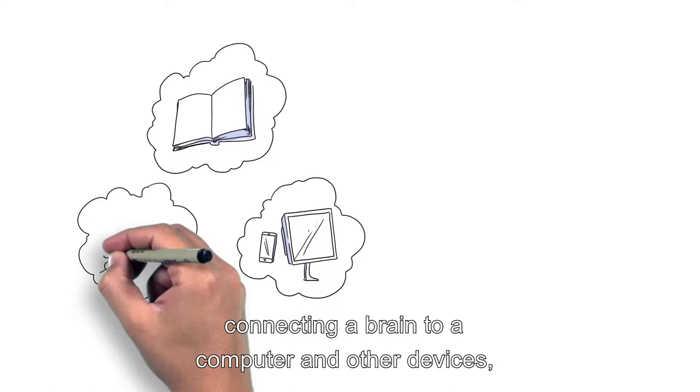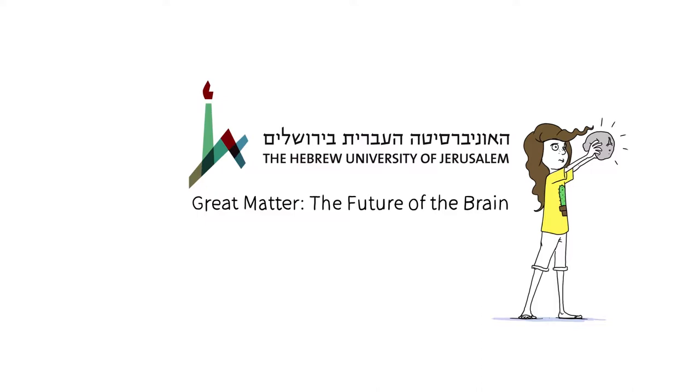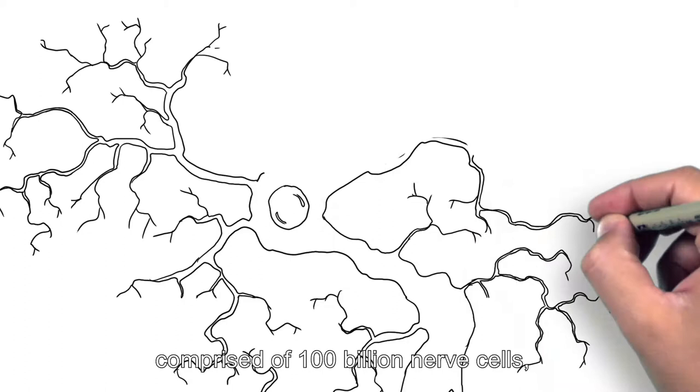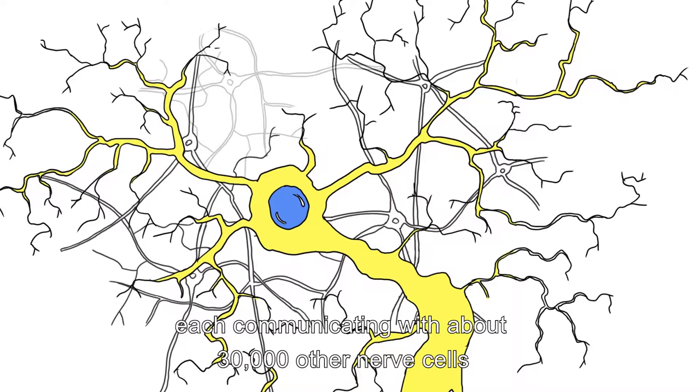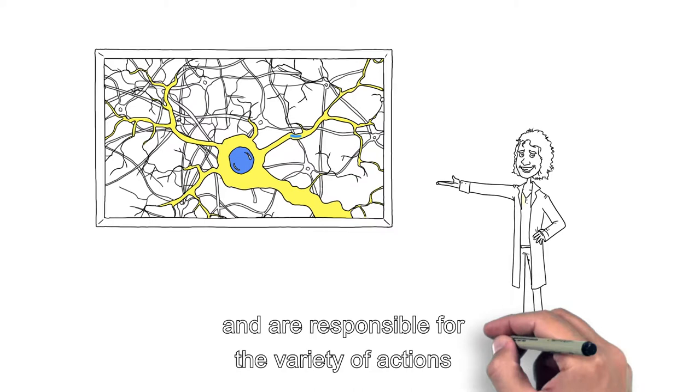And we have to do all this using the brain. The brain is a physical organ comprised of 100 billion nerve cells, each communicating with about 30,000 other nerve cells through connections called synapses. Electrical and chemical signals run around this structural foundation and are responsible for the variety of actions our brain performs.